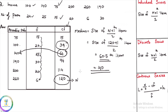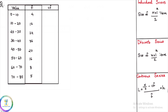For the continuous series, we have been given class intervals and frequency. We come to cumulative frequency. CF: 4; 4+12=16; 16+24=40; 40+36=76; 76+20=96; 96+16=112; 112+8=120; 120+5=125. The CF is given.